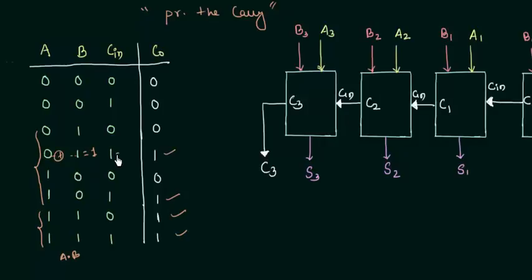And also in this case Cin is 1. So I can say that when A XOR B is equal to 1 and also Cin is equal to 1, your carry output is 1.